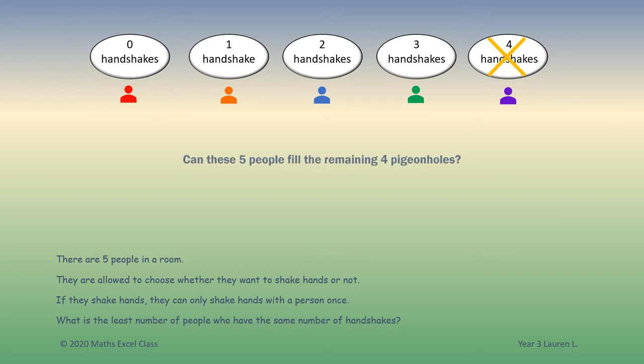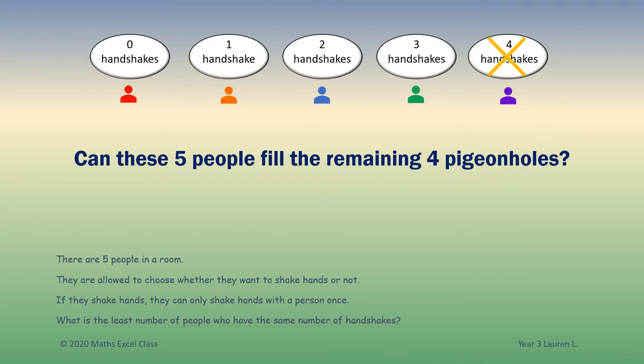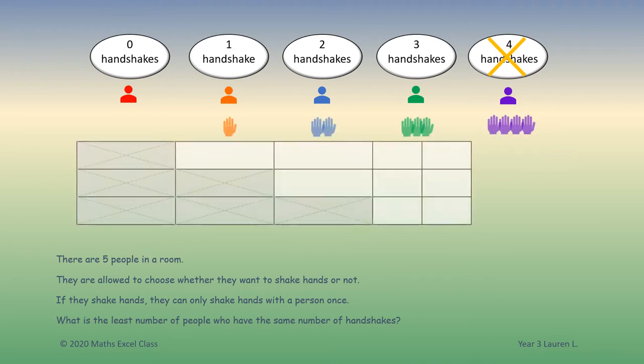Can these five people fill the remaining four pigeonholes? If this person cannot have four handshakes, can this person have three handshakes? Let's check.